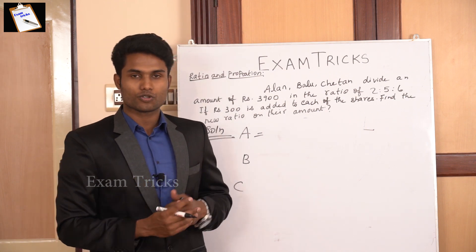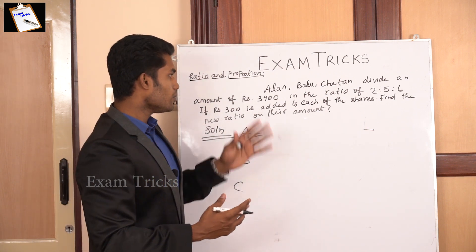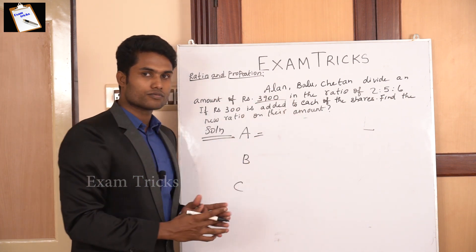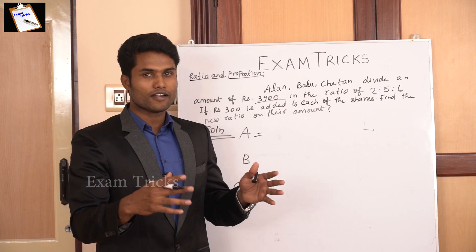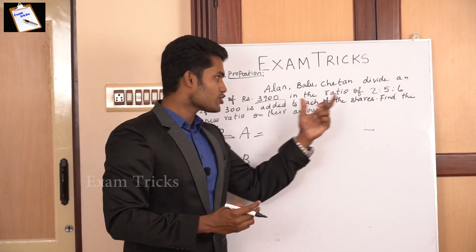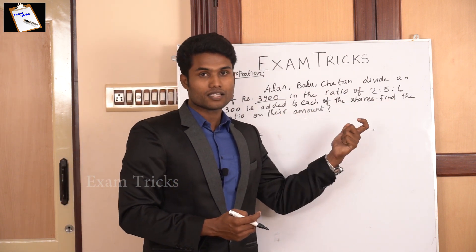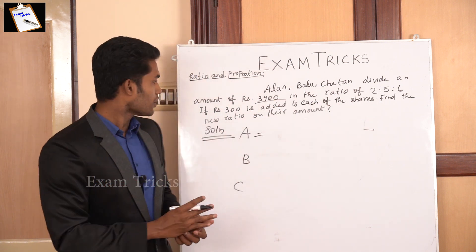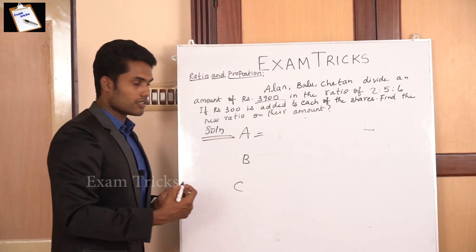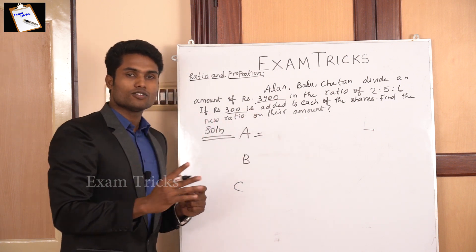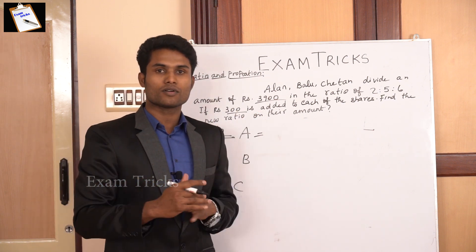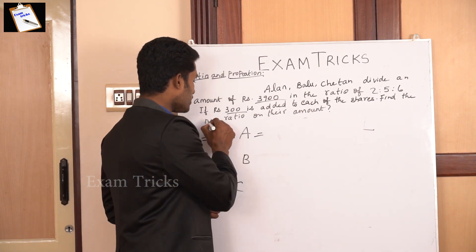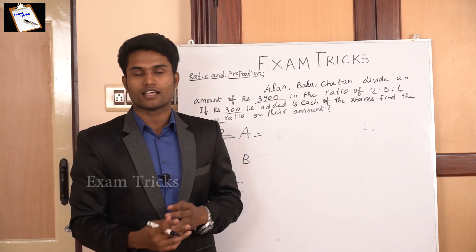Please read it and understand it. If you have 3,900, they will give you 3,900 — that's the ratio. The ratio is 2 is to 5 is to 6. You add the amount, so if you add the ratio, find the new ratio.